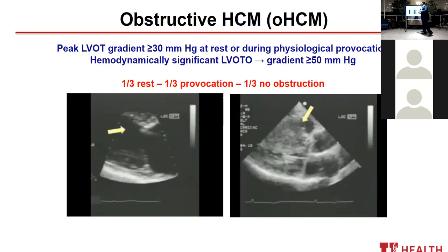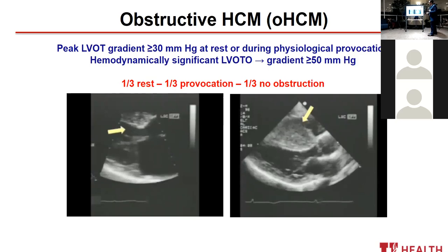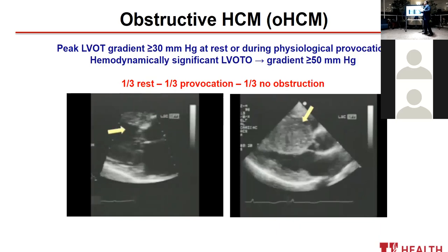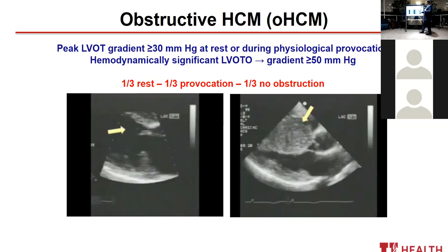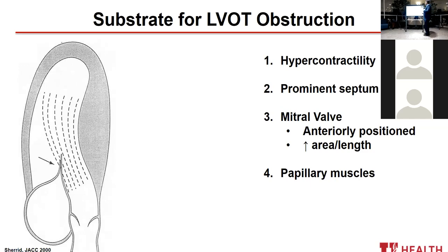This brings us to the determinants of symptoms. For patients with obstructive HCM: LVOT obstruction is defined by a gradient of 30 millimeters of mercury or more at rest or with provocation maneuvers. A hemodynamically significant gradient is above 50. As a rule of thumb, one-third of patients will have obstruction at rest, one-third with provocation maneuvers such as exercise, Valsalva, standing, or postprandial, and another third will have no obstruction. On the image you see typical asymmetric septal hypertrophy and systolic anterior motion of the mitral valve with contact.